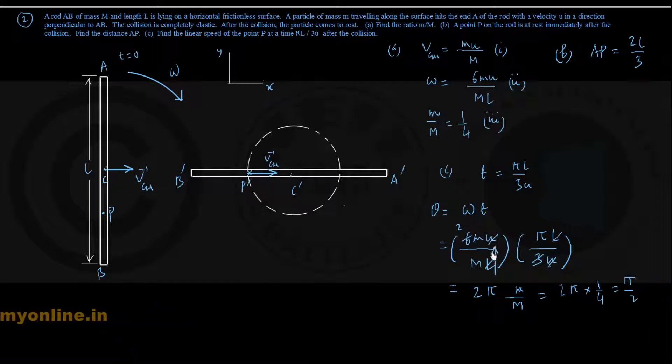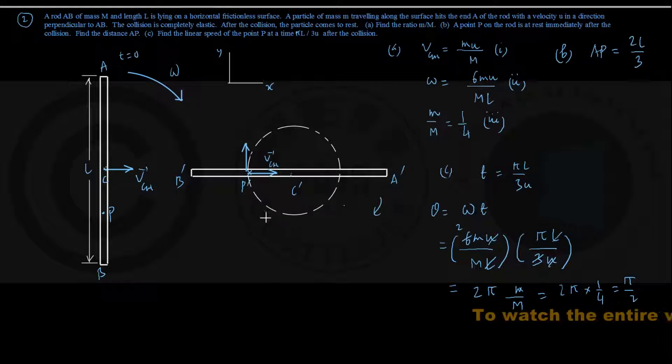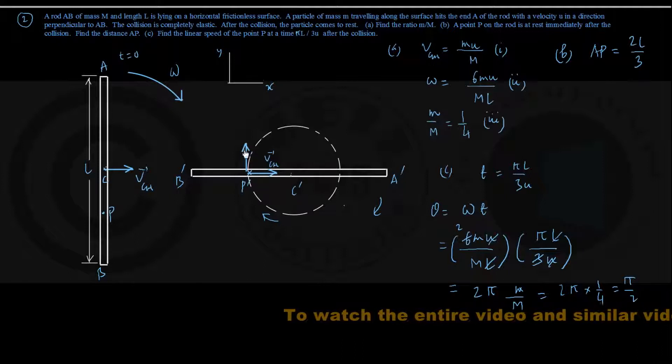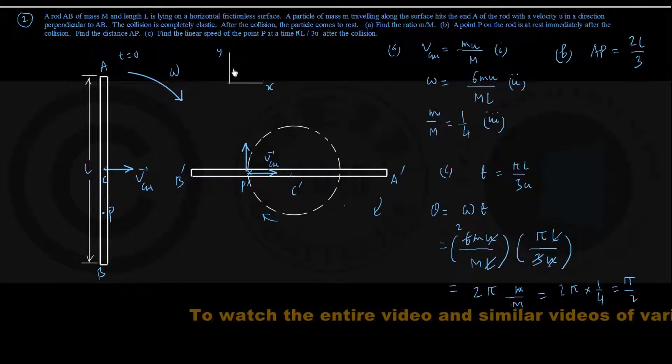Another is along the tangent drawn to the circle described by the point P. In my figure now, as the rod is rotating in the clockwise sense, this particle P is also moving in a clockwise sense, and the tangential direction is pointing vertically upwards in the y direction.